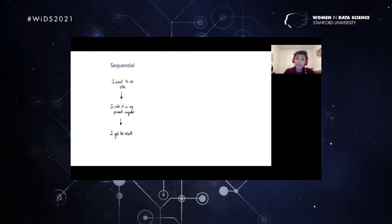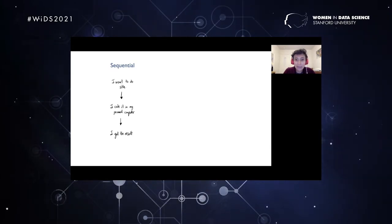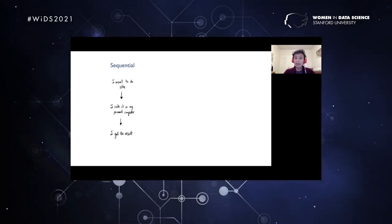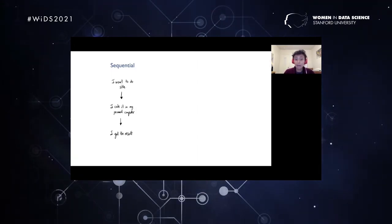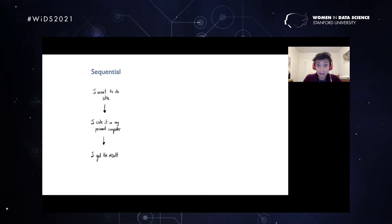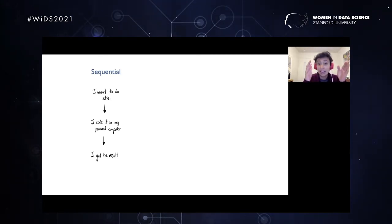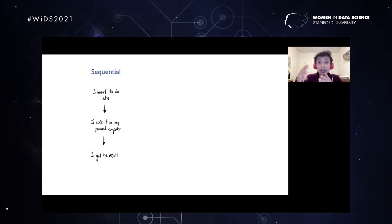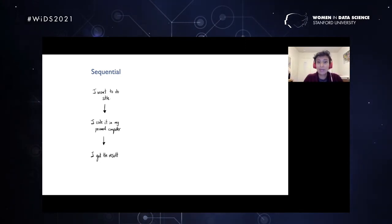When we're thinking about something sequential — when we are running something on our computers and not thinking too much about what is going on under the hood — we just say we want to do something, we code it, run it, press enter and get the result. It's a very straightforward path: you have the tools to code what you want, and a machine like your laptop that gives you the resources you need.